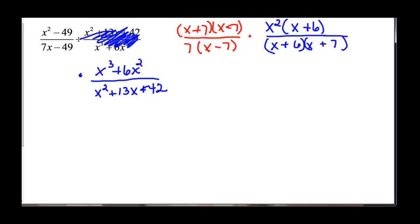X plus 7 on the top and 1 on the bottom. So we can reduce those. X minus 7. There's 1 on the top and 1 on the bottom. So we can reduce those. X squared. No x's on the bottom. X plus 6. Yes, I have 1 on the top and 1 on the bottom. So the only thing I'm left with then is x squared over 7.